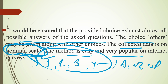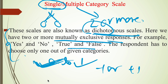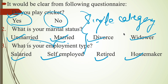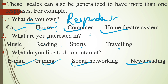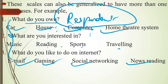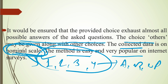Let me revise all the points. What is single or multiple category scale? If the respondent has the choice to give only one answer from the response sheet, then this comes under single category scale. These responses are generally mutually exclusive — for example, yes or no, true or false, plus one or minus one. Single category scales are also known as dichotomous scales. In the case of multiple category scales, the respondent can select more than two responses. Data collected from this method generally comes under nominal scale and is very popular in internet surveys.